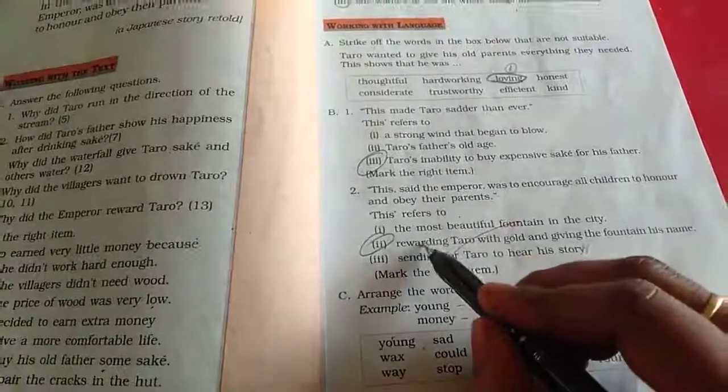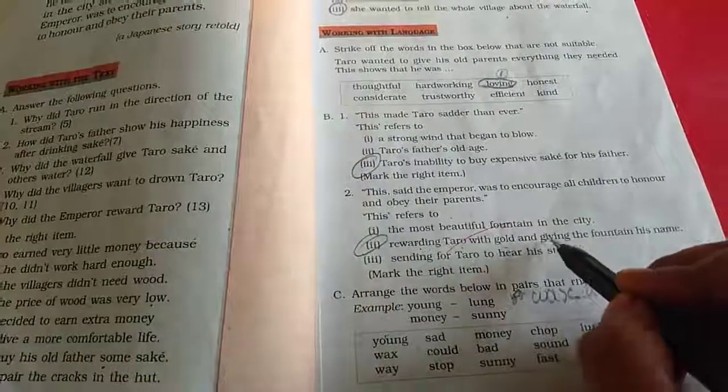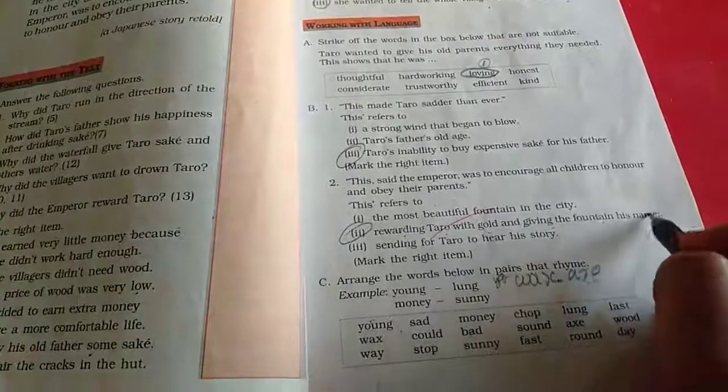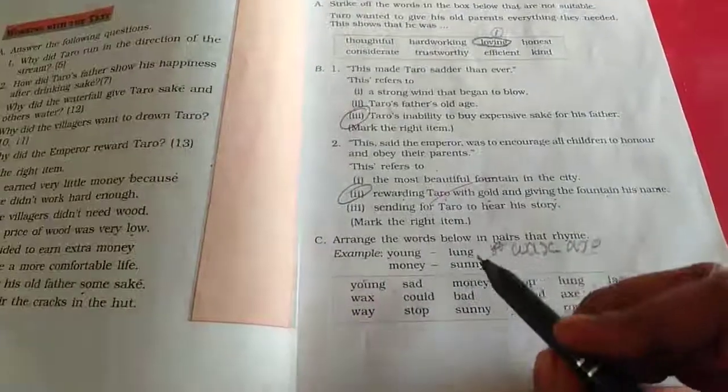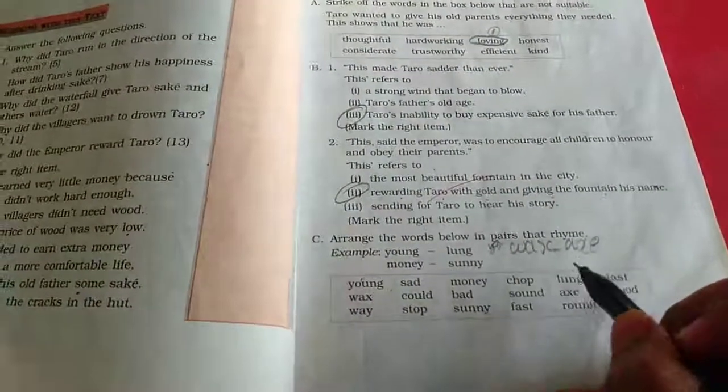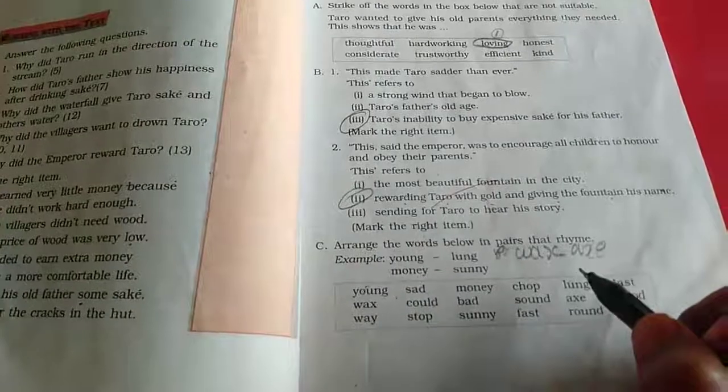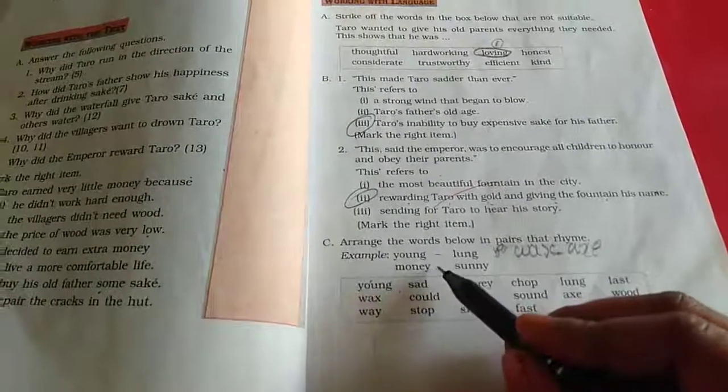So what is the thing? Correct answer. He has the rewarding Tharu with gold and giving the fountain his name. Okay, here we have rhyming words. We have to make it correctly. Two more they have completed.